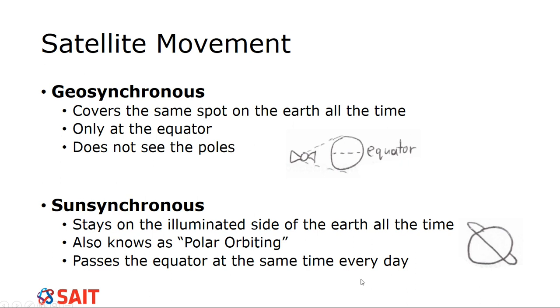Sun-synchronous are a little bit different. So sun-synchronous is more similar to what I was just talking about. So this one stays on the illuminated side of the Earth all the time. So it's also known as polar orbiting because it sees the poles. And then it goes around and it always passes the equator. So it has to be an ellipse and it has to go around the center of mass. So like going back to the inclination angle, those two planes connect to the center of mass. And that's the center of both planes.